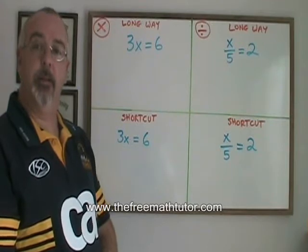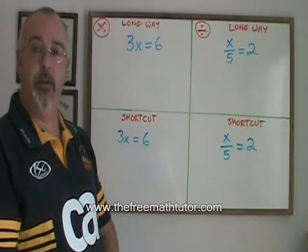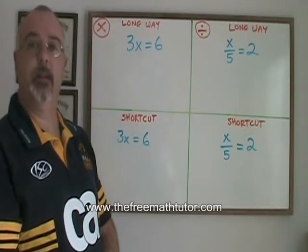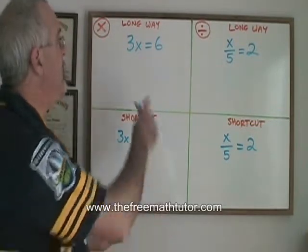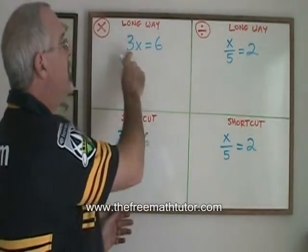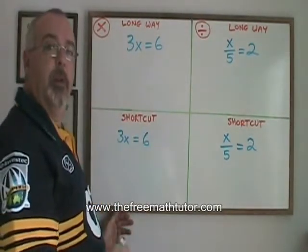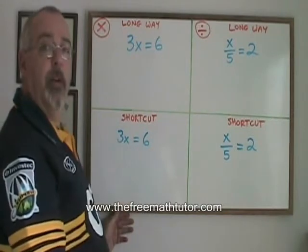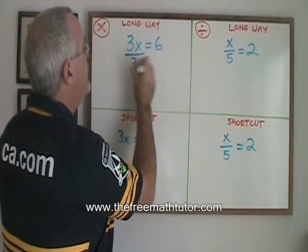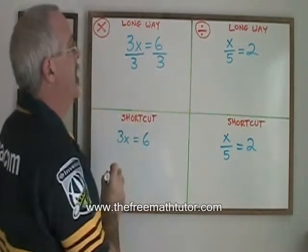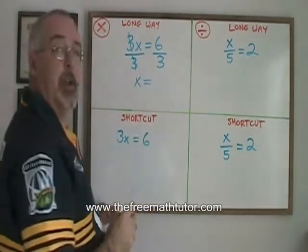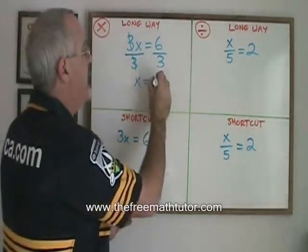When doing basic algebra skills with multiplication and division, there is also a basic algebra shortcut, which works the same way. In this first equation, I have 3x equals 6. My x is being multiplied by a 3. So what I do is I do the opposite — I divide by 3, but I have to divide both sides by 3, and I show it like this. These 3s cancel, my x is isolated, and is equal to 6 divided by 3, which is 2.